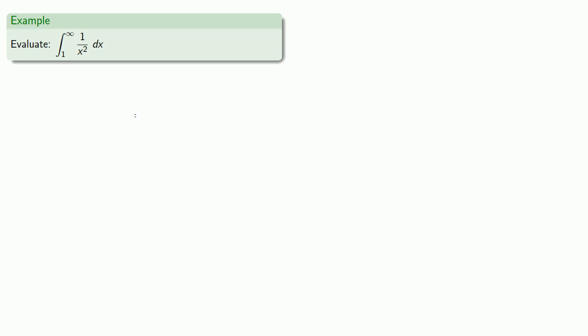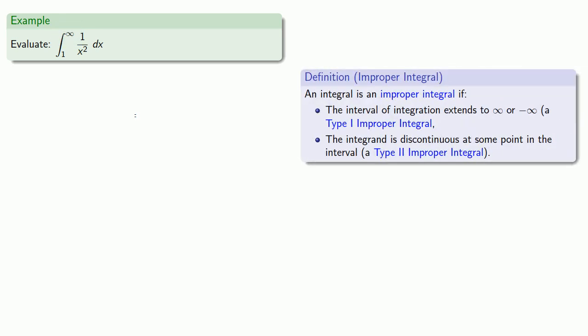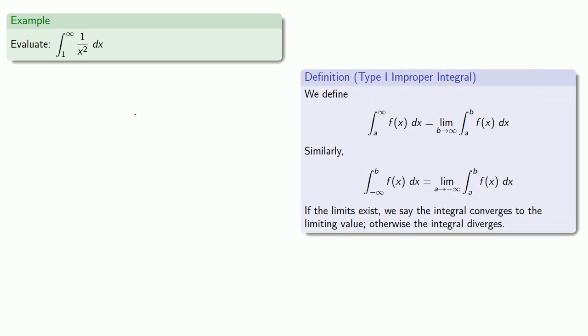For example, suppose we want to evaluate this integral. Since the upper limit is infinity, this is a type 1 improper integral. Not that it really matters. But what does matter is its value, if it exists, is going to be defined as a limit. And from our definition, that will be...